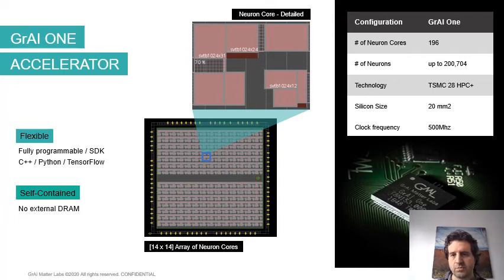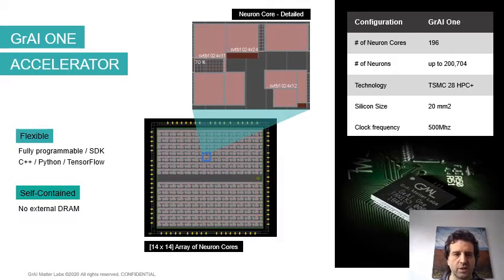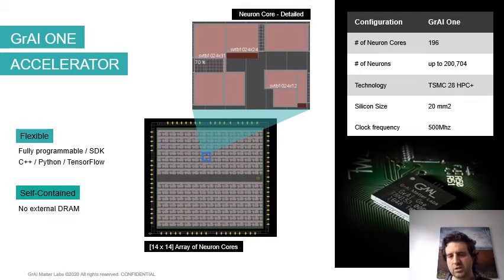So we have actually made a demonstrator for this. We have cheap hardware that implements a small instance of our architecture. It can only handle about 200k neurons. It has 196 neuron cores and it's a modest piece of silicon with 20 square millimeters running at 500 megahertz. It is on our plans to make much larger machines because with 200 thousand neurons, we cannot really have very big applications on it.